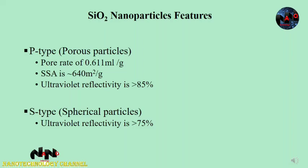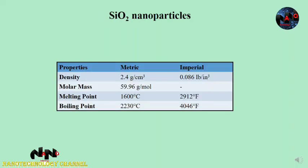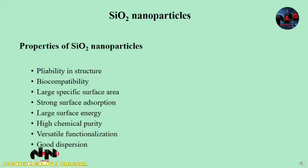The s-type particles have a comparatively smaller surface area. Silicon dioxide nanoparticles appear as a white powder and are generally spherical in shape. Their density is 2.4 grams per cubic centimeter, molar mass is 59.96 grams per mole, melting point is 1,600 degrees centigrade, and boiling point is 2,230 degrees centigrade. Silicon nanoparticles can be made in different sizes and their surface chemistry can be modified to yield a variety of properties and applications.